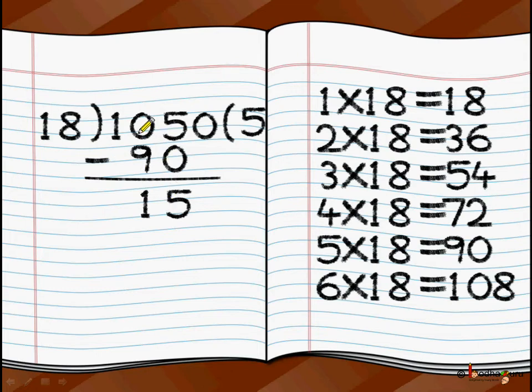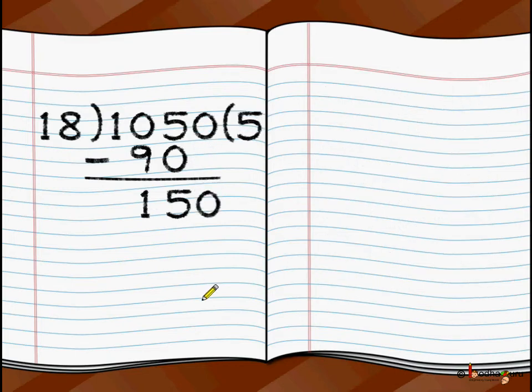So 105 minus 90 is 5 minus 0 is 5. 10 minus 9 is nothing is there. You take a borrow. And it finally comes 15. So 105 minus 90 is 15. Now 0 comes down. We move to the next step.